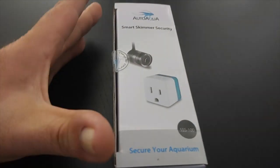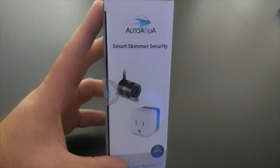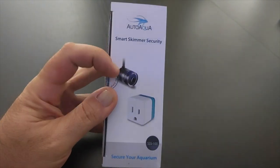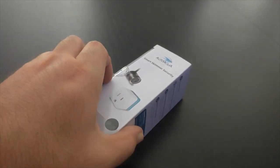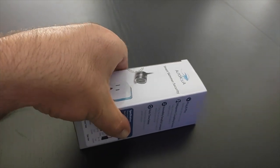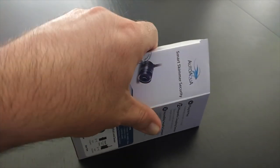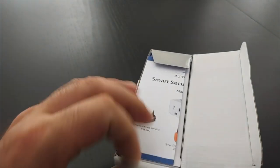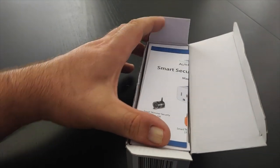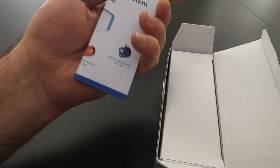What I got right here is the same type of device, but this is a little sensor. It's a magnetic sensor that you put inside your collection cup, and if it starts to fill up with water, it will shut your skimmer off.